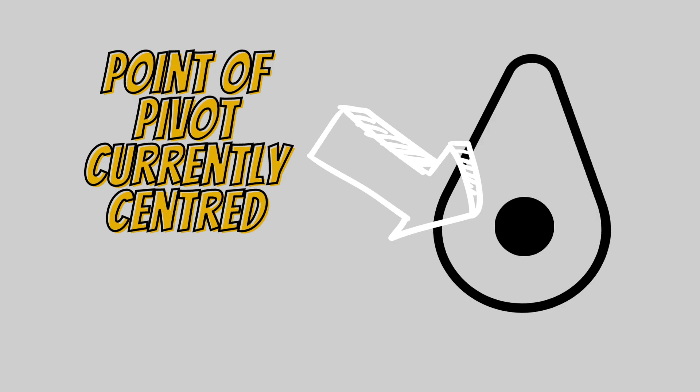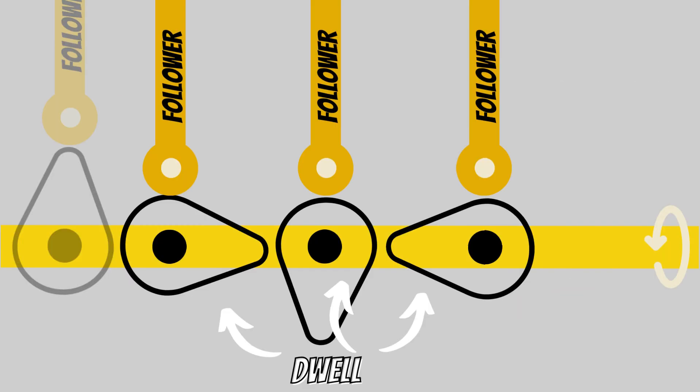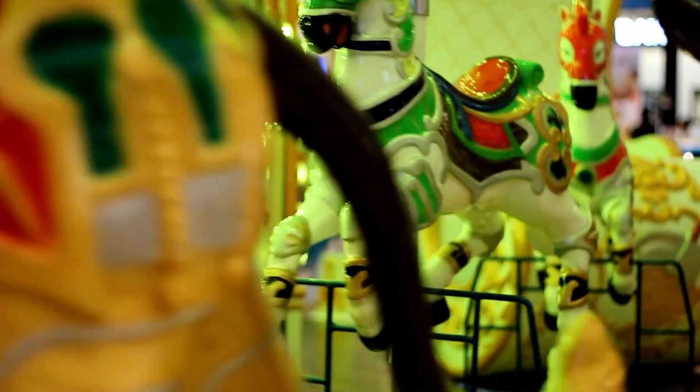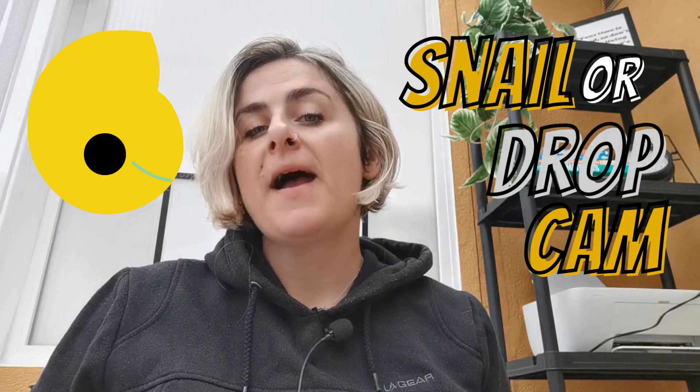That leads us to the next cam. The pear cam is pretty obvious where it got its name from. With a pivot point centred within the circular part, this shape creates a dwell — remember that means stationary — for at least half a turn and then gently rises and falls. This is how carousel horses are made to rise and fall.